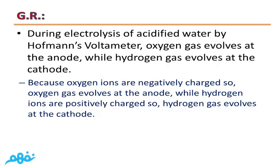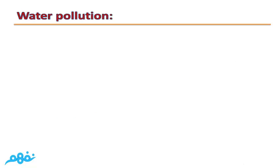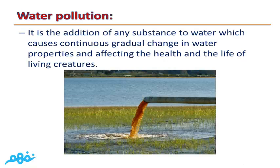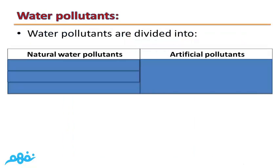Water pollution is the addition of any substance to water which causes a continuous gradual change in water properties, affecting the health and life of living creatures. Water pollutants are divided into natural water pollutants and artificial pollutants.